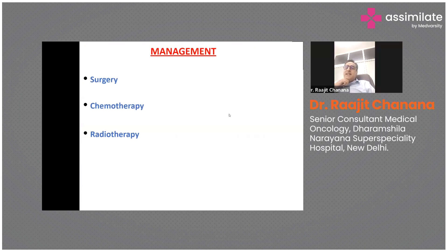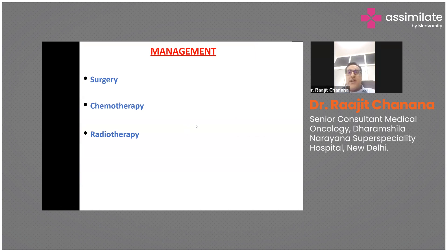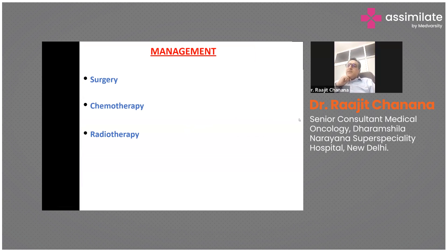Management basically comprises three major parts: surgery, systemic treatment, and medicines. For gastric cancer, chemotherapy is the standard treatment, and in stage four disease we have options of targeted therapy and immunotherapy.